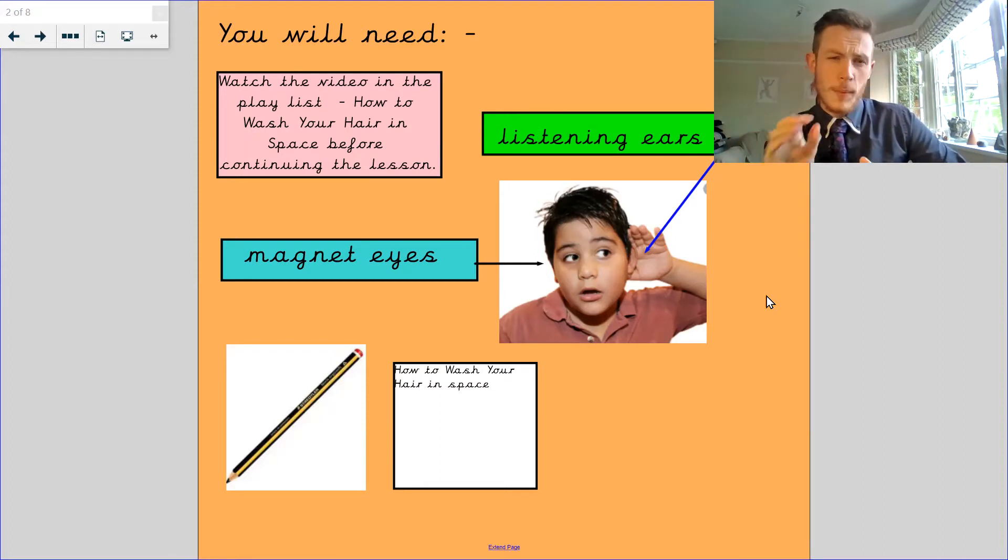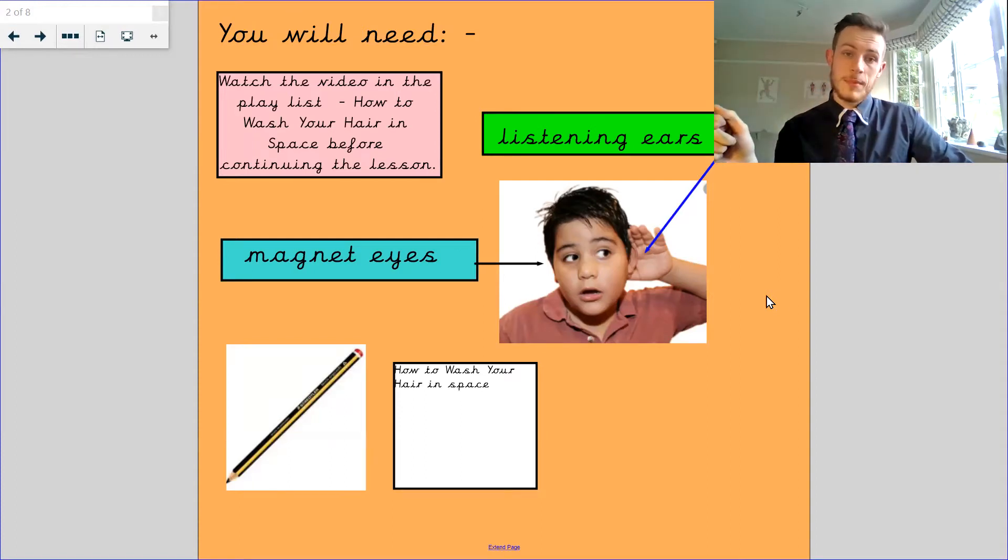If you're ever unsure about what happened next in the story map or the text map, you could always go back into the video, the playlist, where it's how to wash your hair in space.